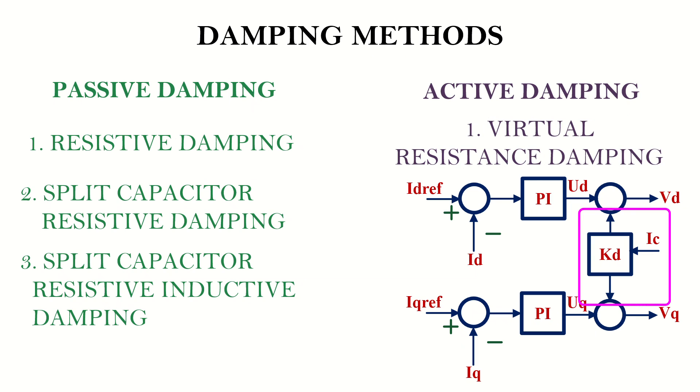Here we sense the current of the filter capacitor, multiply it by a constant, and then subtract the resulting value from the output of the current controller before generating the PWM signals. When we implement this, the controller limits the bandwidth of the current controller.